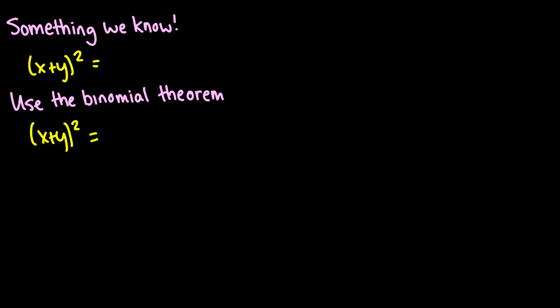Let's do it the way we know with (x + y)^2. Of course we know this is the same thing as (x + y)(x + y), and we can expand this out to be x squared plus xy plus xy plus y squared, which is x squared plus 2xy plus y squared.